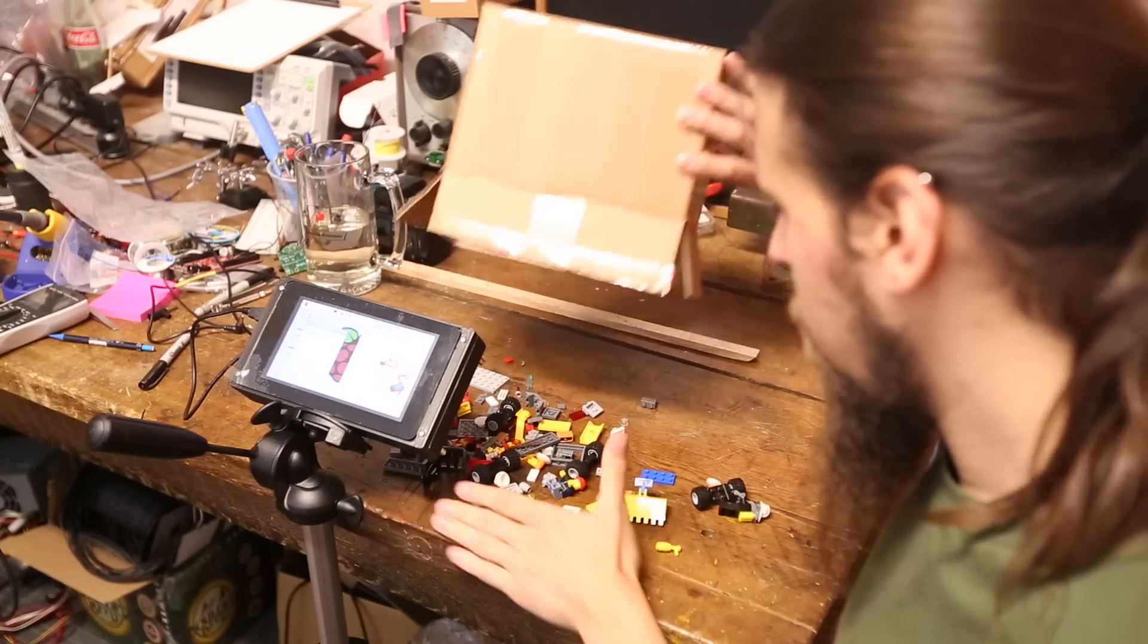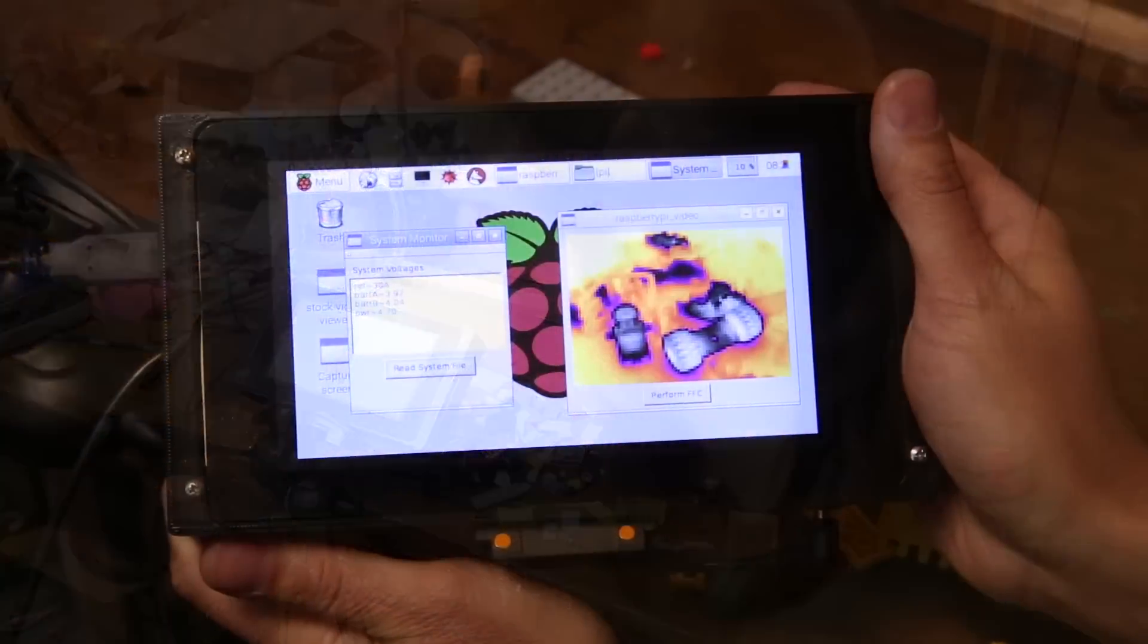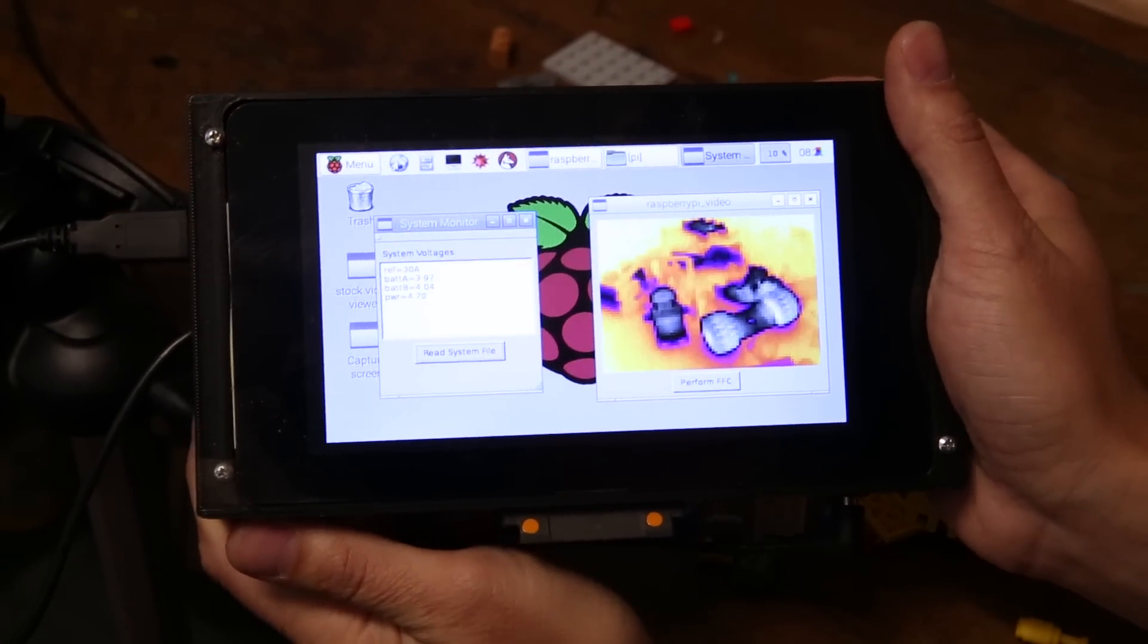A FLIR camera is an infrared camera that can show you the temperatures of things. FLIR cameras can tell you a lot about the world that you can't see with your naked eye.